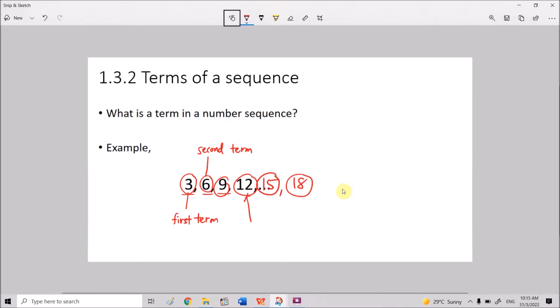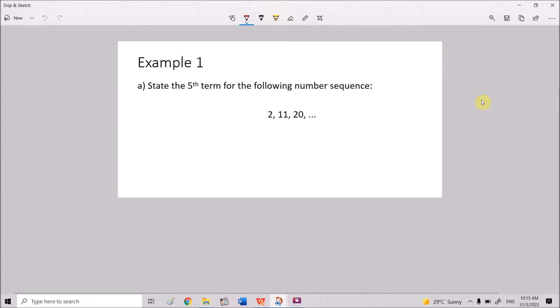Let's look at more examples. State the fifth term for the following number sequence. So in this given number sequence, we only have the first, the second, and the third. If you are going to continue from here, we have to find the fourth and then the fifth term. We determine the pattern here. From 2 to 11, we add 9. 2 plus 9, you get 11. 11 plus 9, you get 20. Hence adding 9 is the pattern here.